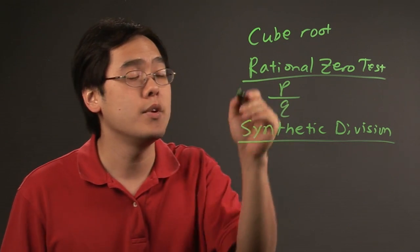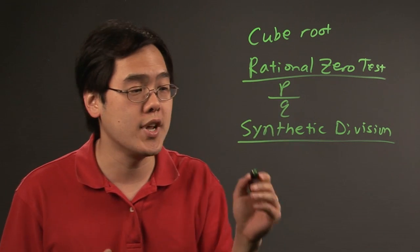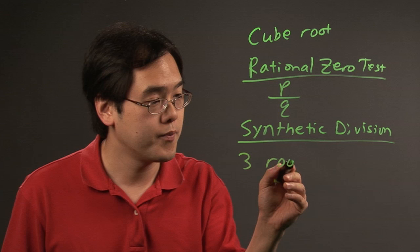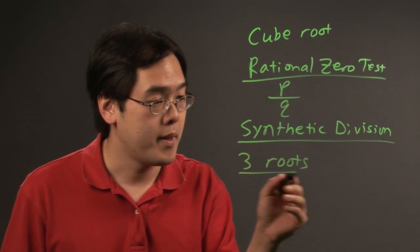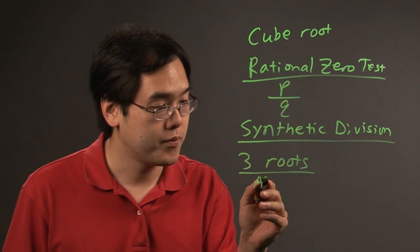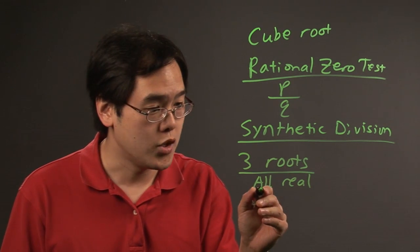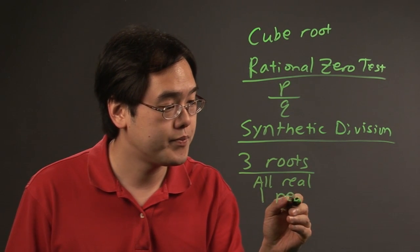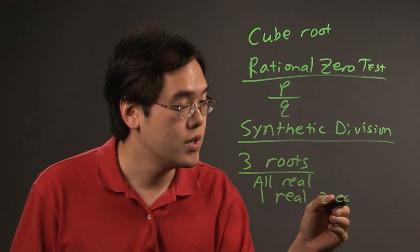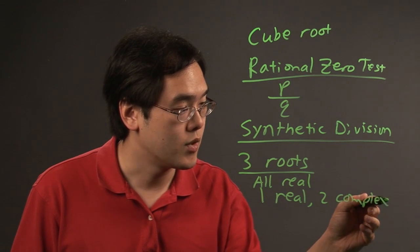But what ends up happening here is in the cubic equation, you're going to have three roots. Now, they can either all be real or you may have a situation where you have one real and two complex roots.